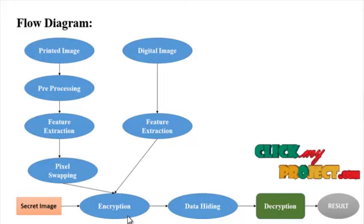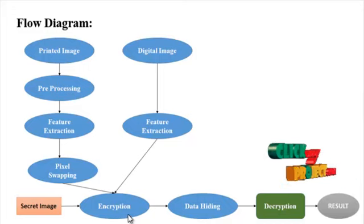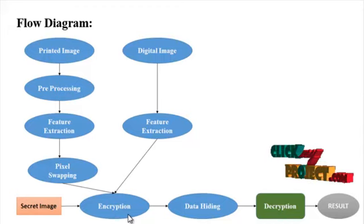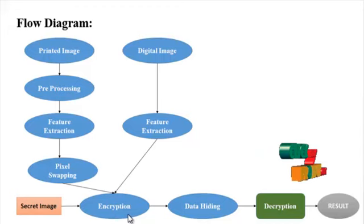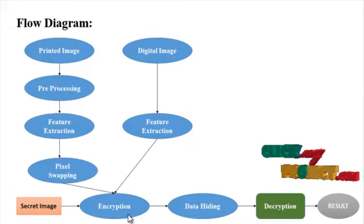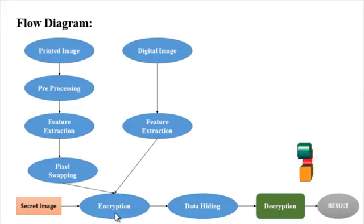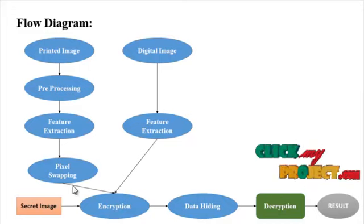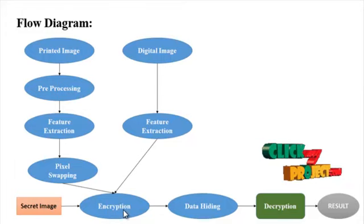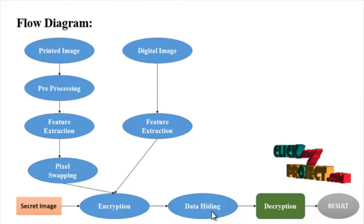The proposed N,N NVS scheme can ensure a true color secret image using n-1 natural shares and one noise-like share. Input images include n-1 natural shares and one secret image; the output image is the noise-like share. Finally, an XOR operation is performed for each color plane with the secret image.